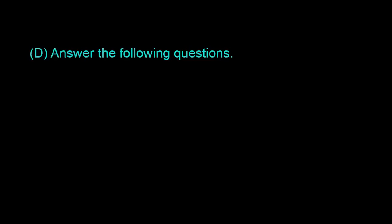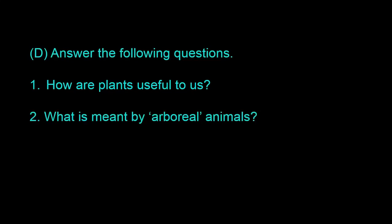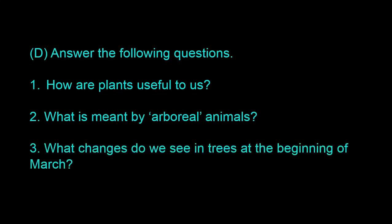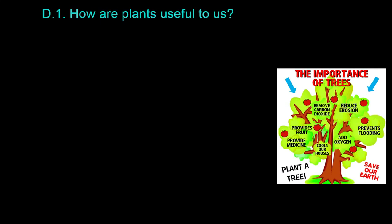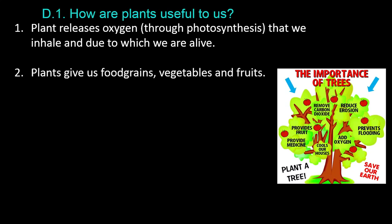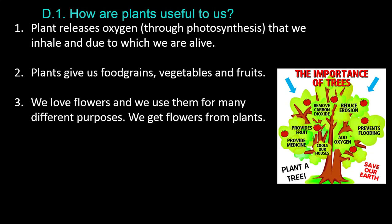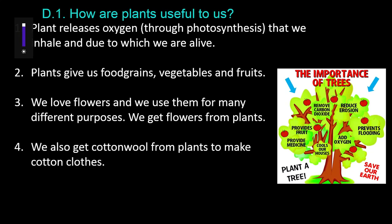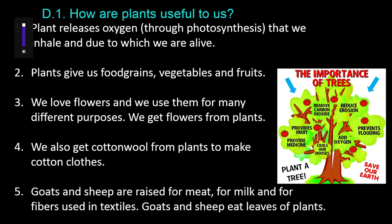Question D.1: How are plants useful to us? Plants release oxygen through photosynthesis, which we inhale and due to which we are alive. Plants give us food grains, vegetables, and fruits. We love flowers and use them for many different purposes — we get flowers from plants. We also get cotton wool from plants to make cotton clothes. Goats and sheep are raised for meat, for milk, and for fibers used in textiles; goats and sheep eat leaves of plants.